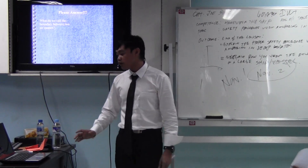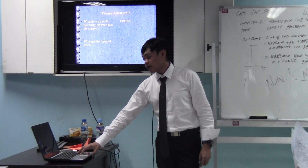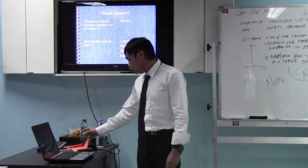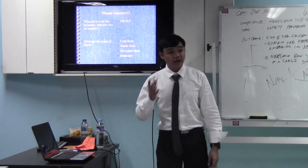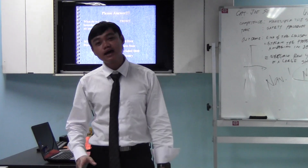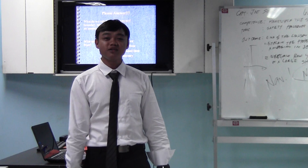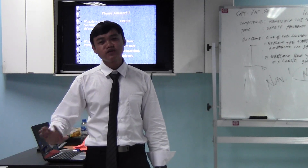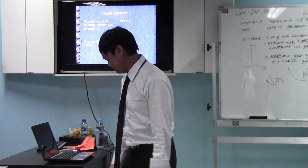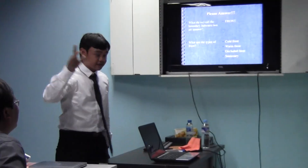Please answer the following: What do we call the boundary between two air masses? It is called a front. What are the four types? Cold front, warm front, stationary front, and occluded front. So before we end, think of it this way — cold air mass and warm air mass, and there is no front, so there will be no boundary between the two. Your question will be your assignment. Thank you.